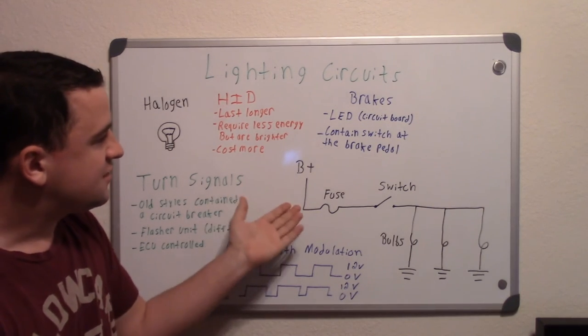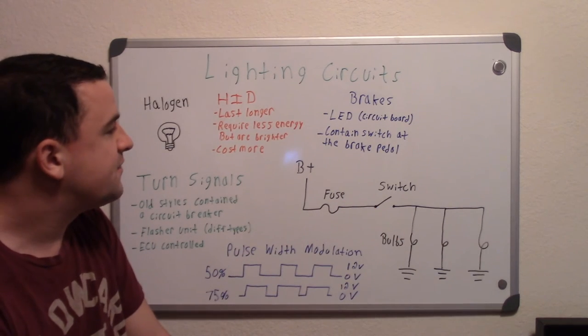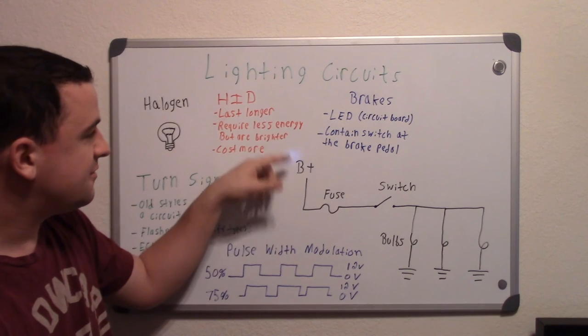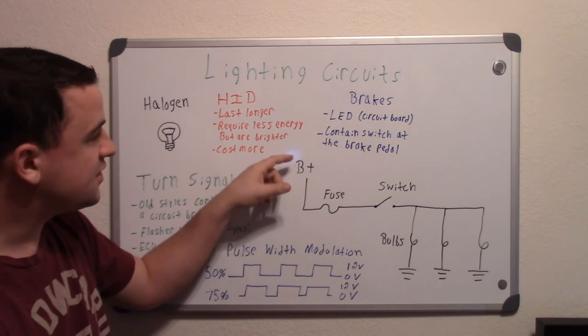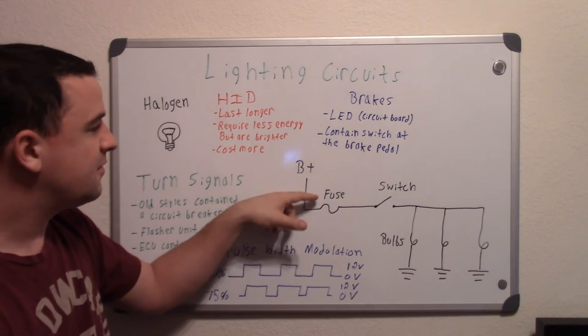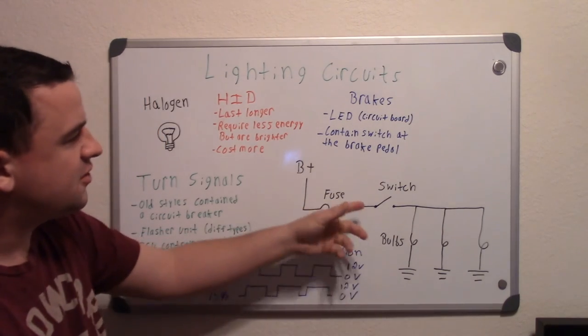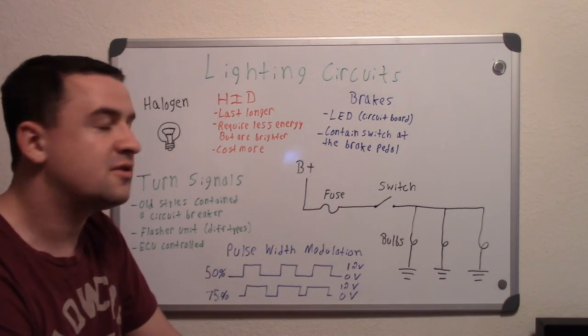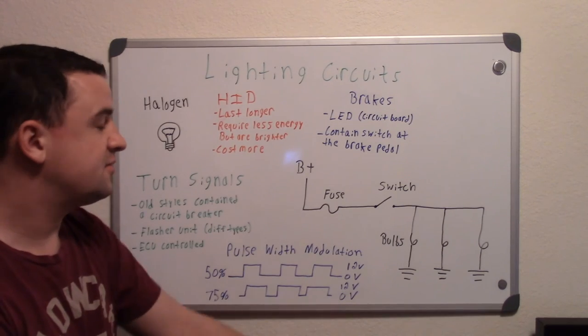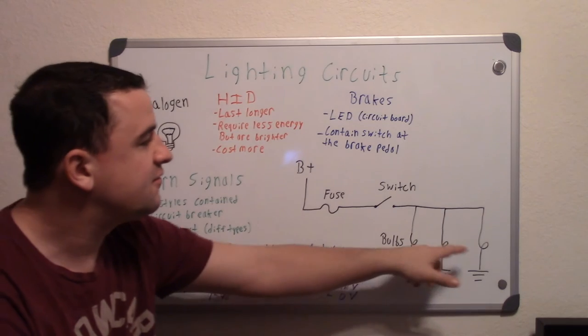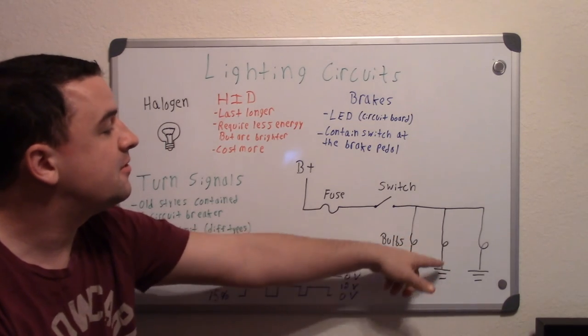And I just have a basic circuit here of how a circuit may look. You get a B+, so that's the battery positive voltage coming in from the positive terminal. Come down through the fuse and then through the switch. So a switch can be many different things. Like your brake pedal, you press on the brake, you complete the switch and it'll go to the bulbs. So you may have your left and right side bulb and then your high mount bulb there.